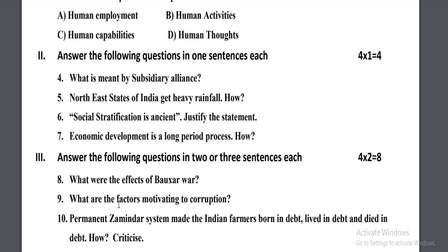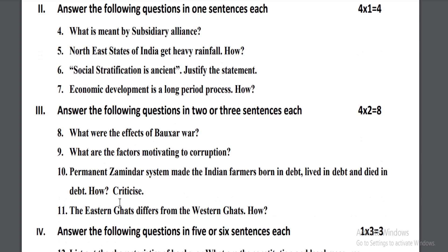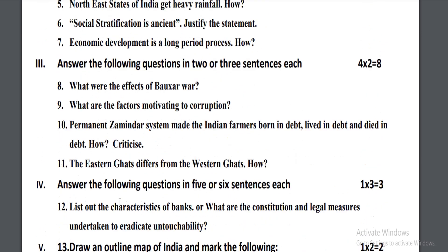In the fourth main there is only one question for three marks. There is an option — either list out the characteristics of banks, or answer what are the constitutional and legal measures undertaken to eradicate untouchability. This is the three-mark question.